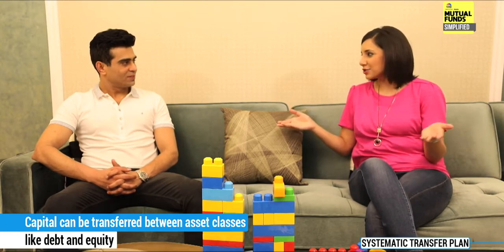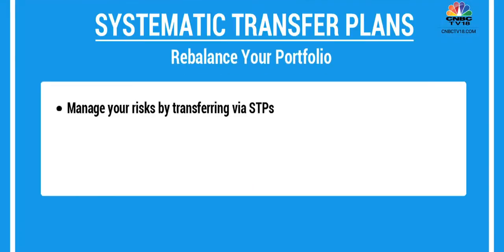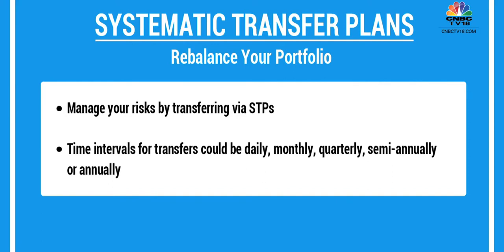These transfers can be done irrespective of market conditions — whether equity or debt is in favor, transfers can be made accordingly. So if you invested a lump sum and want to change the allocation, you can use an STP to do so.